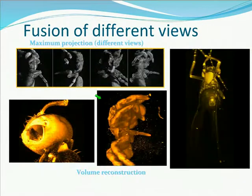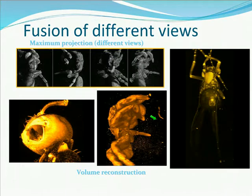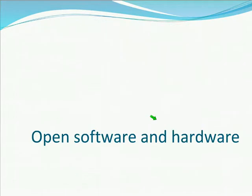Here are more examples from really opaque samples — ants, spiders, and Drosophila embryos.